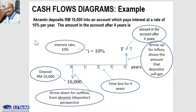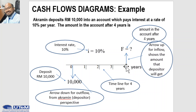Another example: Akramin deposits 10,000 into an account that pays interest at 10% per year. The question asks for the amount in the account after 4 years. From Akramin's perspective, the 10,000 deposit at year 0 is a cash outflow, shown as a downward arrow. The future value F at the end of year 4 is shown as an upward arrow, representing the amount received after 4 years at 10% interest.